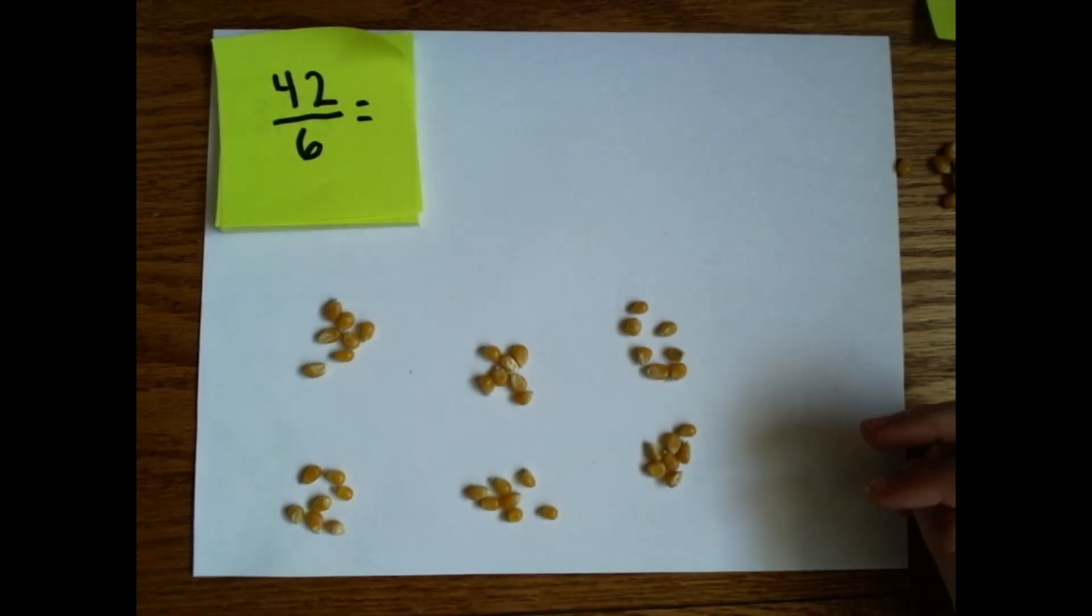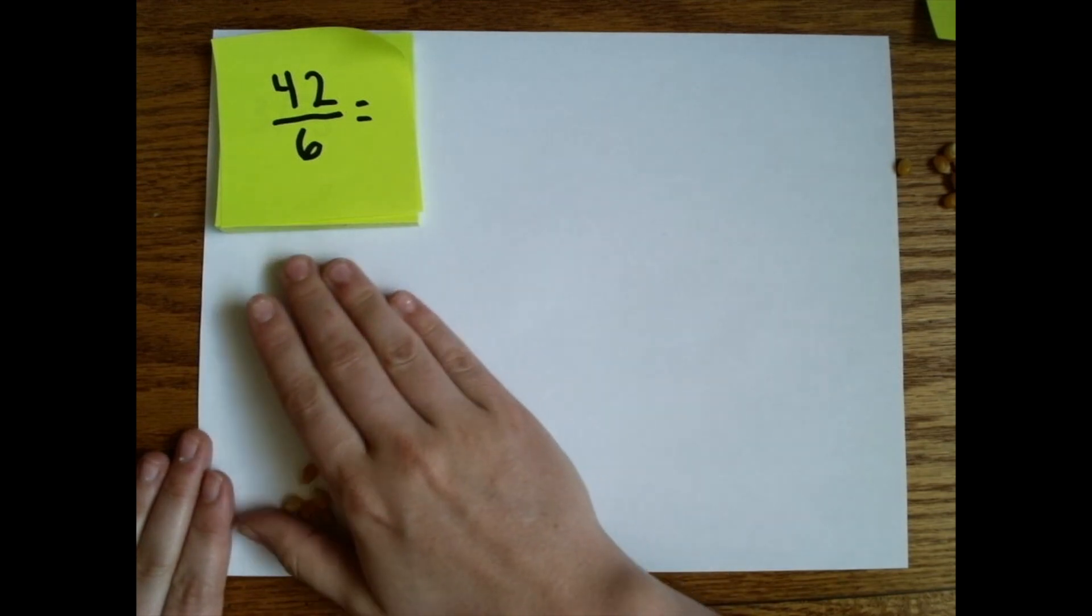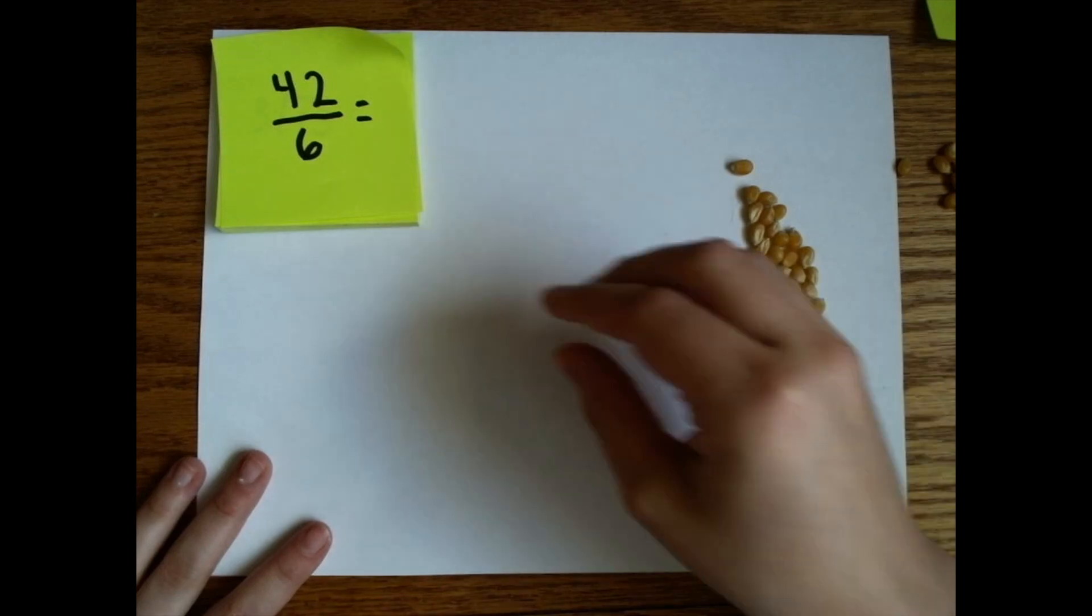There's seven in each. What do you think would happen if instead I took these 42 popcorn and divided them into seven groups? I'm not going to show you this time. I just want you to kind of make a guess. Okay.